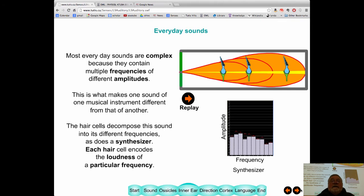So, this basilar membrane is like one of these synthesizers. It decodes all the frequencies into the activation of different hair cells. And then, depending on how much vibration is being produced, you hear different loudness of that particular frequency.